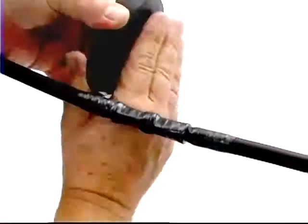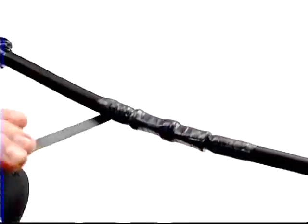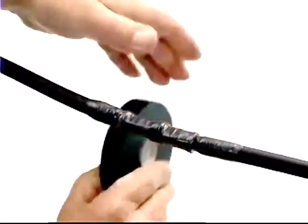For re-insulating a connection, the rule of thumb is that you should build up the tape insulation to one and one half times the existing cable insulation.